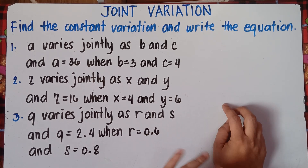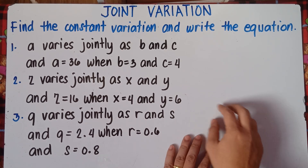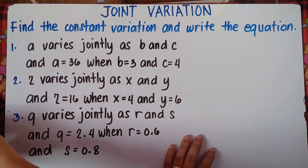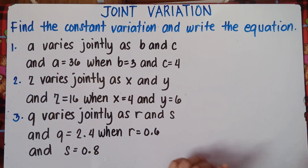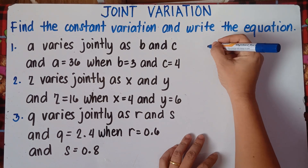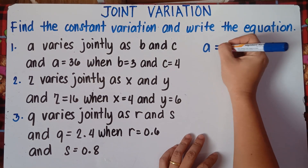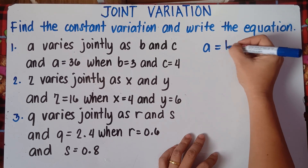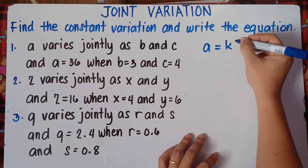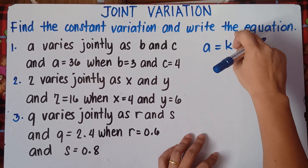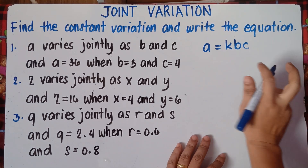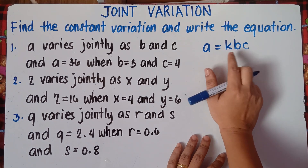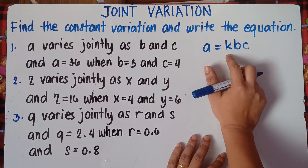Alright, let's start with number 1. In joint variation, there are 2 or more variables involved. First thing to do is write the equation. It says A varies jointly as B and C. You can write that as A equals KBC — do not forget K. In joint variation, 2 or more variables are involved, so simply multiply. Always remember there is K.